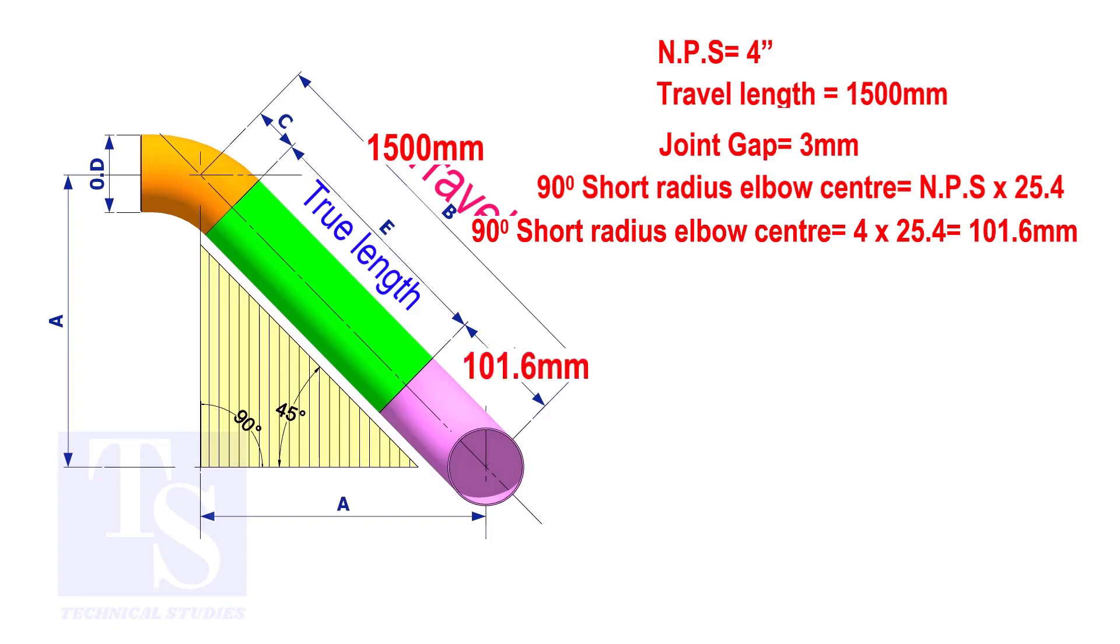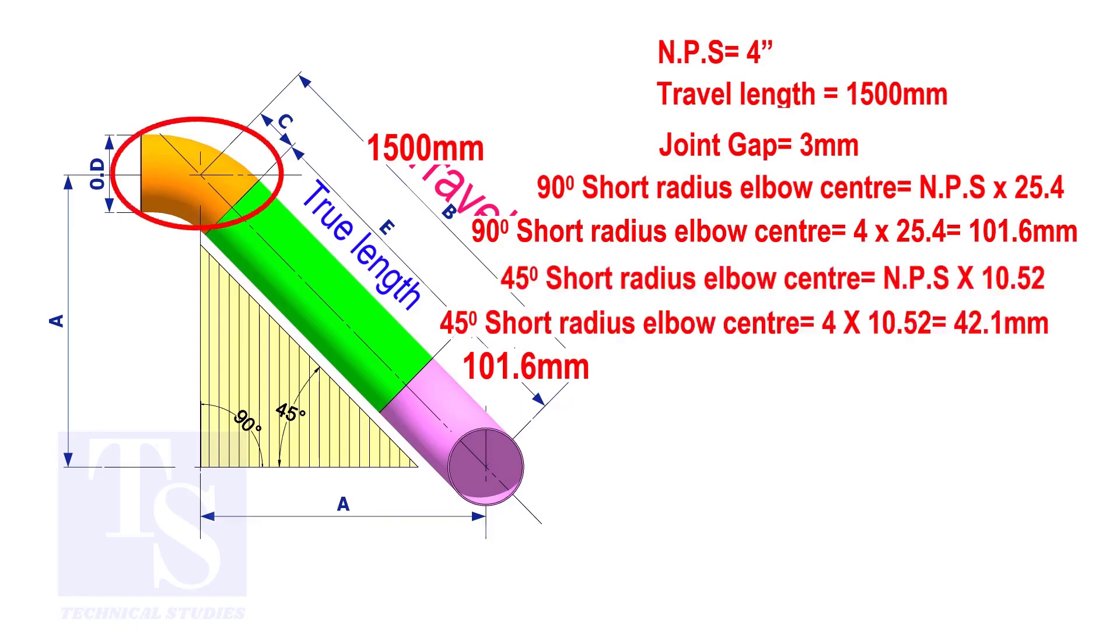To calculate the elbow center of a 45 degree short radius elbow, multiply the nominal pipe size by 10.52. The answer is 42.1 millimeters.